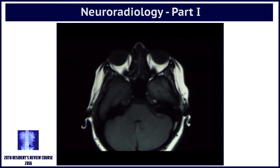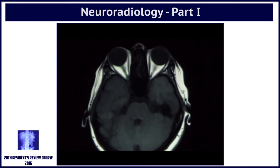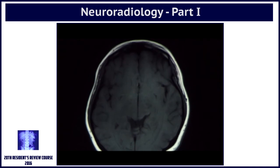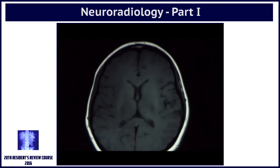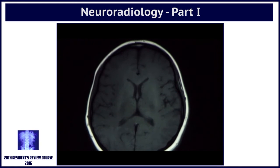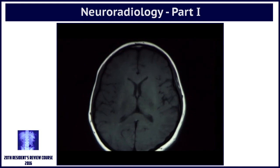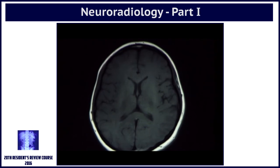When we get this first set of T1 weighted images, the reason why different tissues look different is because they are plotted on the basis of differences in their T1 relaxation time. It's actually quite simple. When we get different tissue contrast based on differences in T1 relaxation times, it is called a T1 weighted sequence.